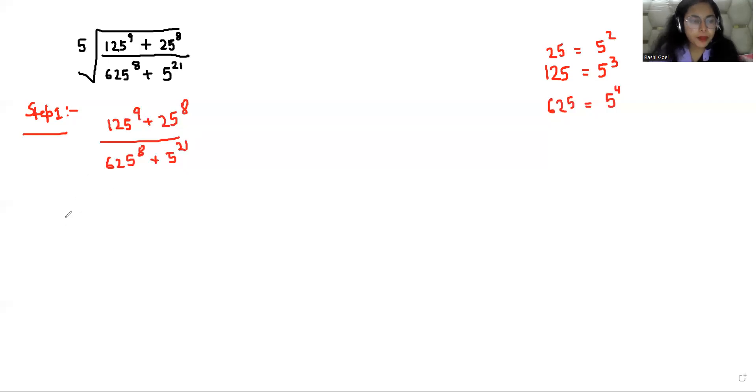Now in place of 125 I can write 5 power 3, so 5 cubed whole power is 9, plus 25 I can write 5 squared power 8, divided by 625 I can write 5 power 4, so 5 to the 4th power 8, plus 5 power 21.